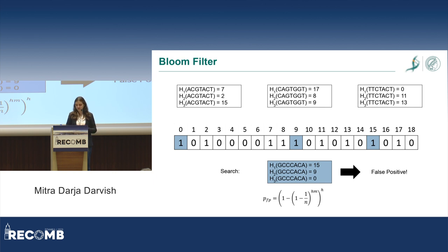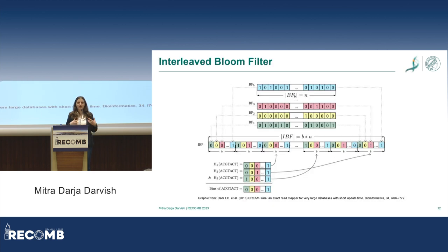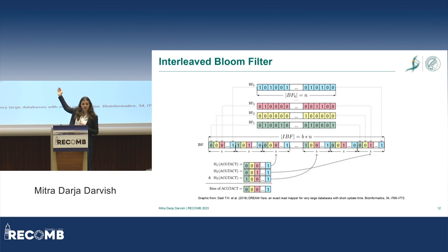This is obviously only working for one sequencing experiment. Now I want to talk about how we scale this to thousands of experiments. For each sequencing experiment, we can create a single bloom filter.